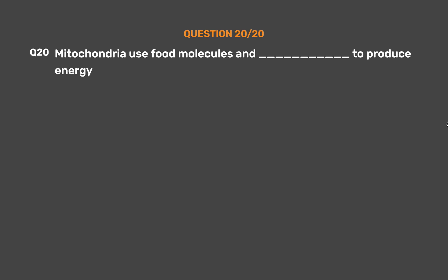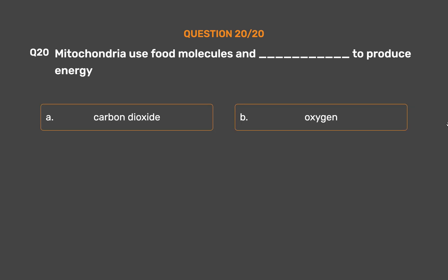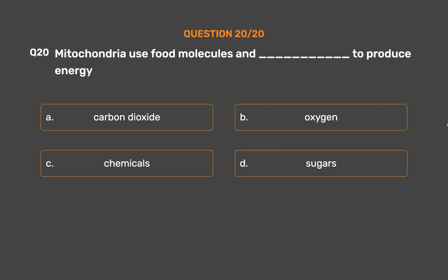Question number 20. Mitochondria use food molecules and blank to produce energy. Option A: Carbon dioxide. Option B: Oxygen. Option C: Chemicals. Option D: Sugars.